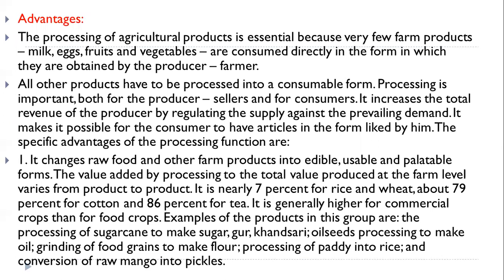Next is advantages of processing. The processing of agricultural products is essential because very few farm products like milk, eggs, fruits, and vegetables are consumed directly in the form in which they are obtained by the farmer. All other products have to be processed into a consumable form. Processing is important both for the producer-seller and for the consumers. It increases the total revenue of the producer by regulating the supply against the prevailing demand, and it makes it possible for the consumer to have articles in the form liked by them.